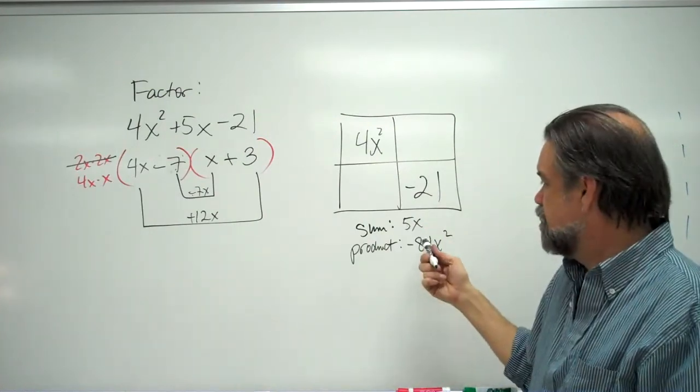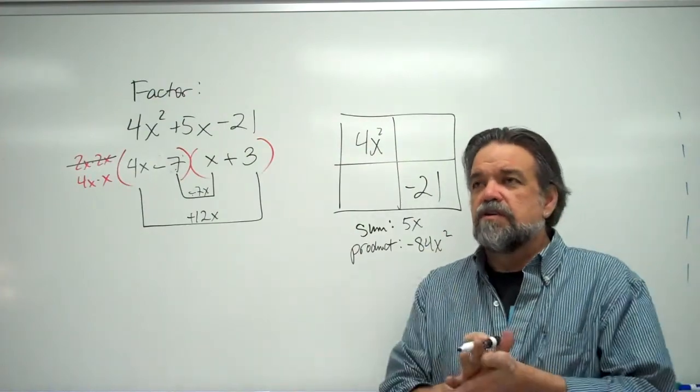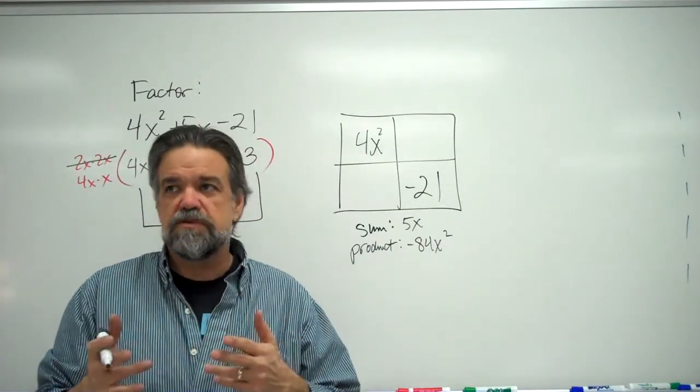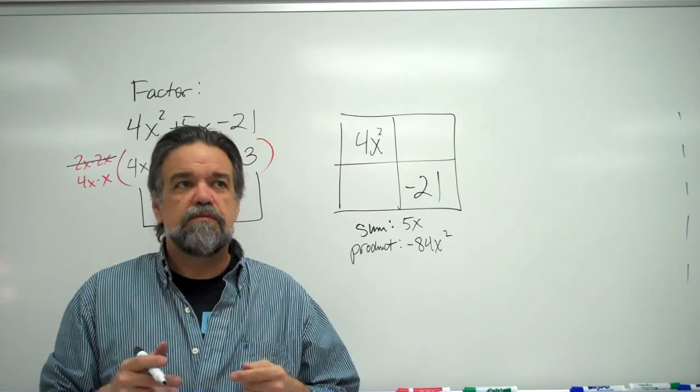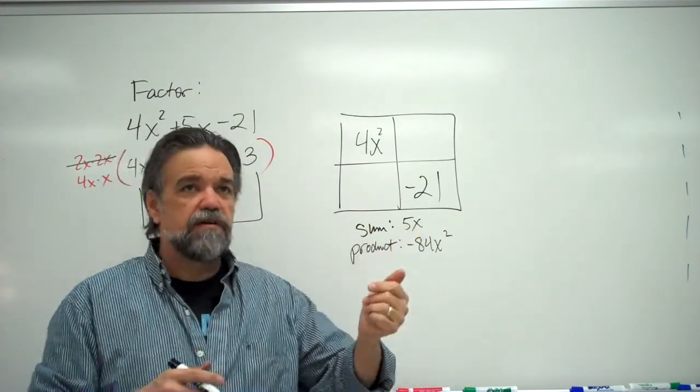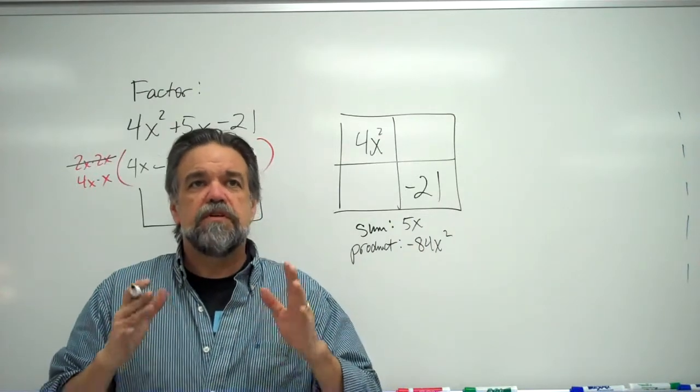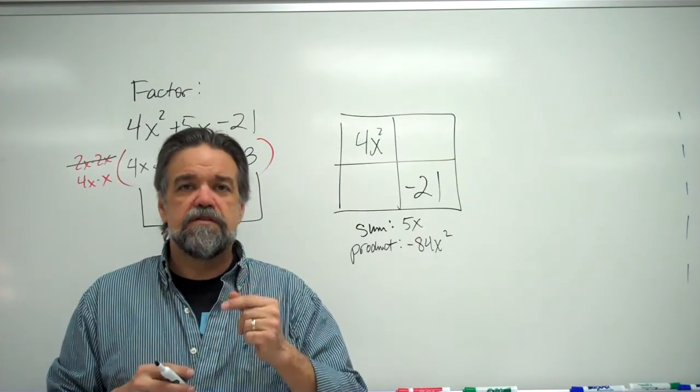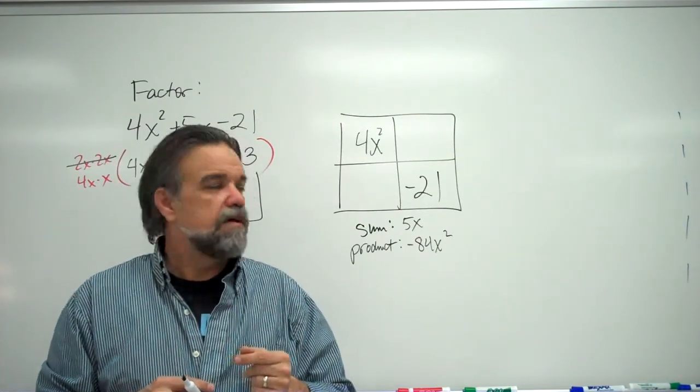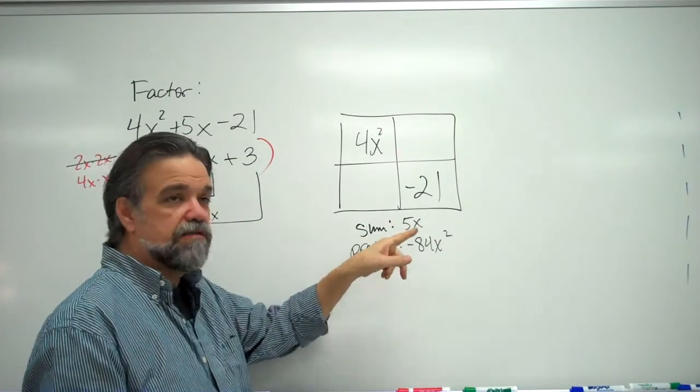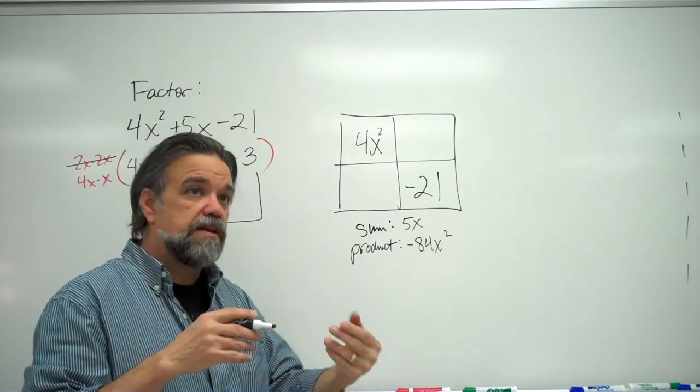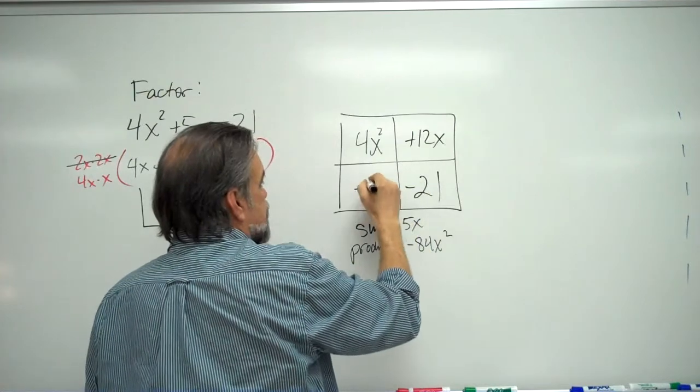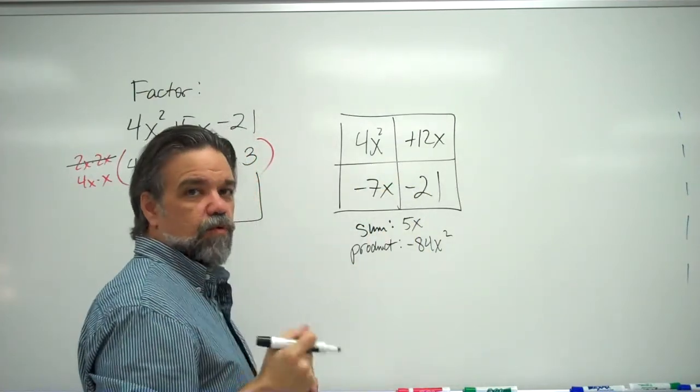Again, let's just focus on the coefficients, 5 and negative 84. So I want two numbers that multiply together to be negative 84, so that means one's positive, one's negative, and whose sum is positive 5. So in other words, two numbers that multiply together to be 84 whose difference is 5, since one's positive, one's negative. 7 and 12. Got it. And let's see. Since I want the sum to be a positive 5, I want it to be positive 12 and negative 7, since 12 is bigger than 7. So, plus 12x and minus 7x. We're well on our way here.